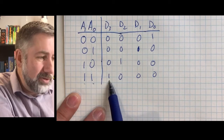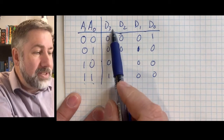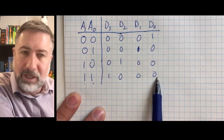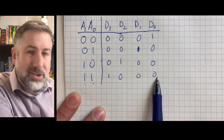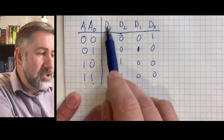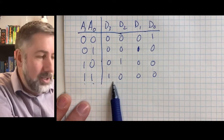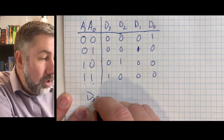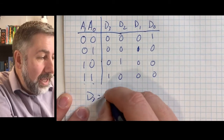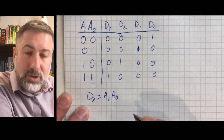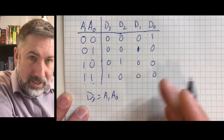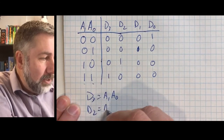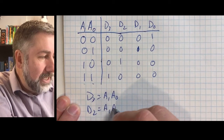So let's build this out. This is fairly straightforward to construct. D3 is true when A1 and A0 are both true, and no other time. D2 is true when A1 is true and A0 is false.